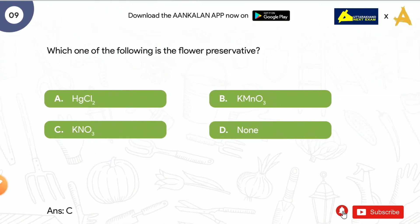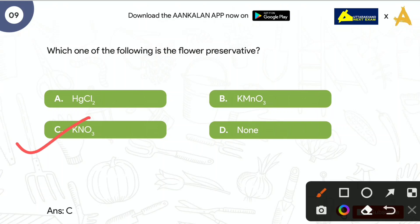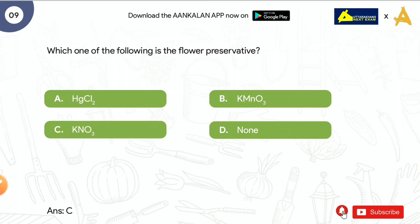Next question is: Which one of the following is the flower preservative? Options are: HGCL2, KMNO3, KNO3 (potassium nitrate), and None of the above. The correct answer is potassium nitrate, which is KNO3.